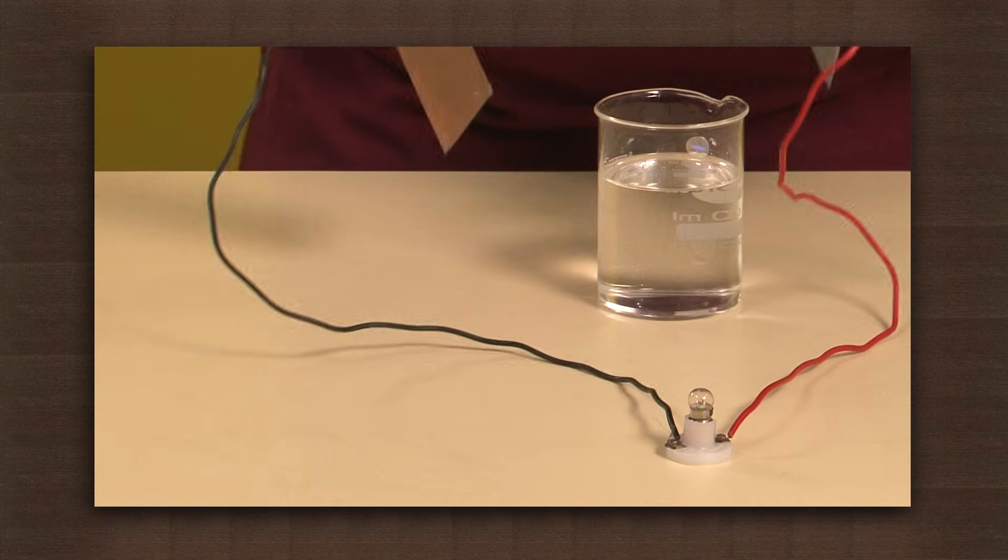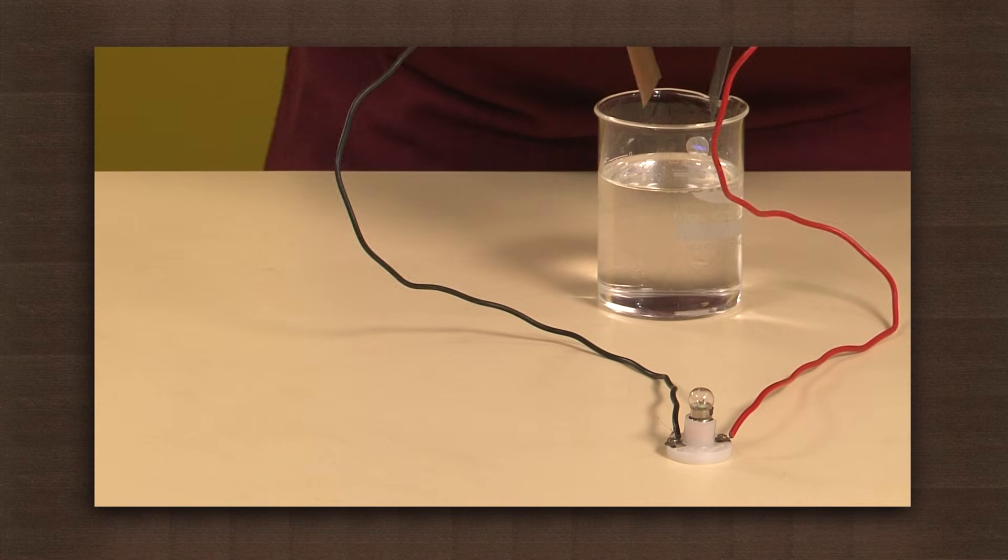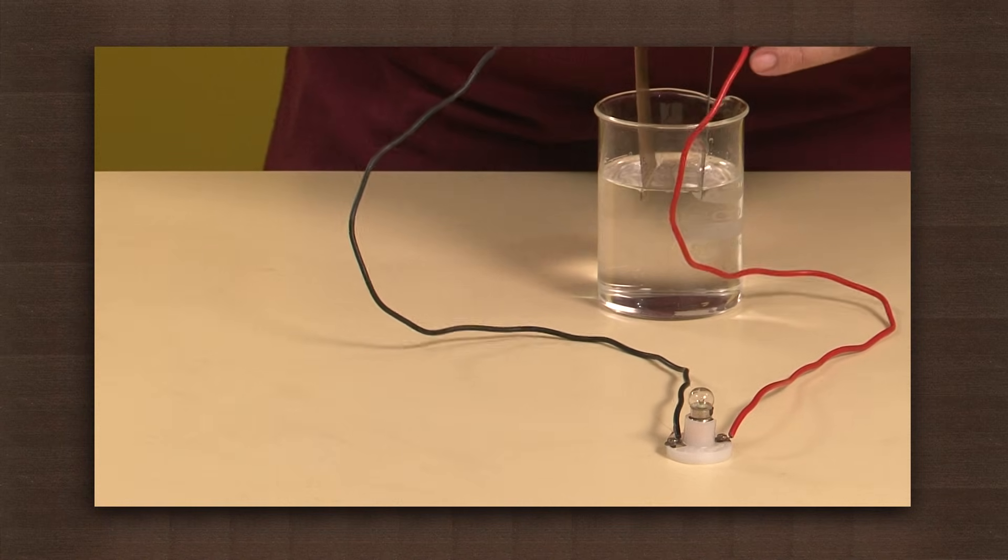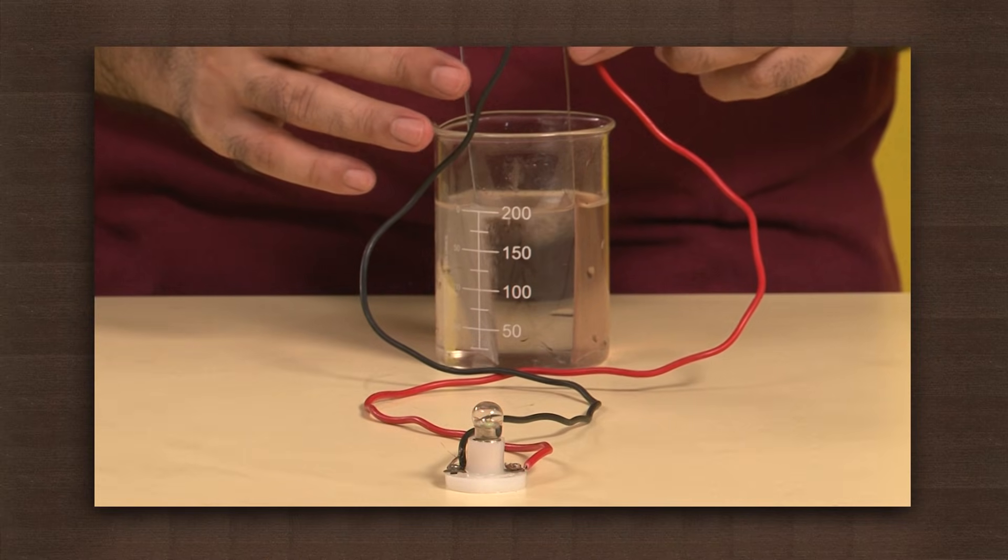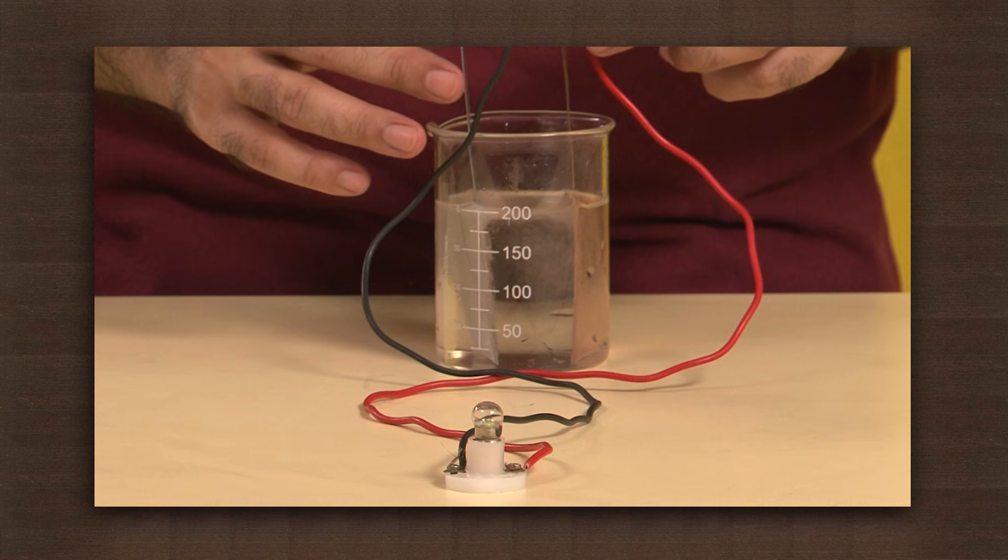Take the zinc and copper plates and connect a wire to both of them like this. They will act as electrodes. Next, put the copper electrode and the zinc electrode into the acid. Make sure they do not touch one another.